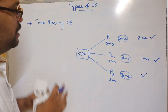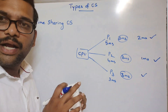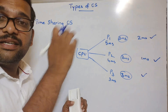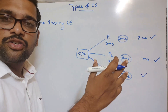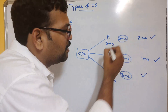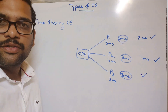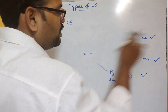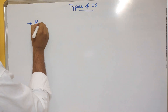The difference between multi-programmed and time sharing is: in multi-programmed, the CPU switches to another process based on I/O operations — if P1 triggers I/O, the CPU moves to P2 to avoid idleness. But in time sharing, the CPU is given to the next process after every fixed time interval, regardless of I/O. That is the time sharing operating system.